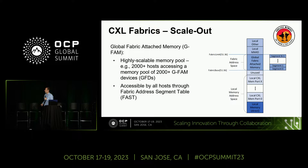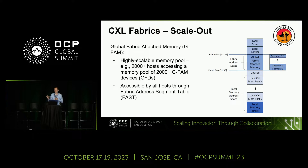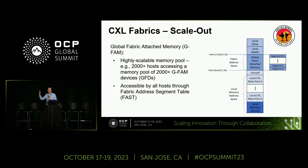In terms of scale-out, we've defined something called Global Fabric Attached Memory, or GFAM. This is a highly scalable memory pool — a complete redesign approaching it from the perspective that the memory is highly shared. The 4K ID space — a hypothetical limit — if you can imagine 2,000 hosts accessing a common memory pool of 2,000 GFAM devices, that's the scale this has been designed to. All that memory pool is accessed through a structure in the host edge switch called the Fabric Address Segment Table, or FAST.